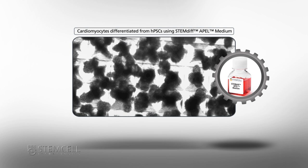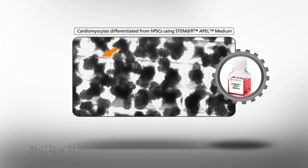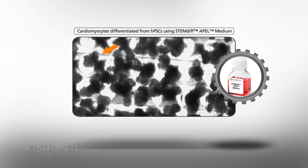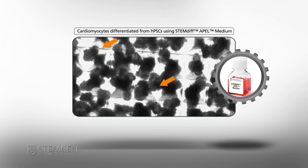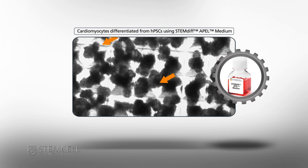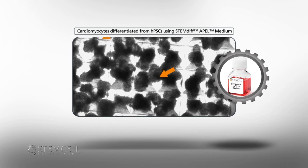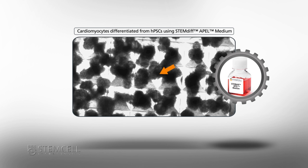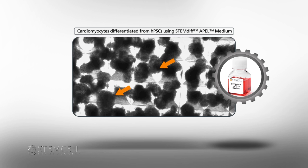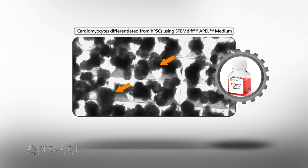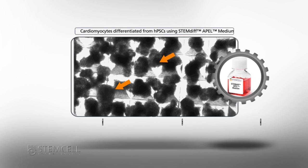For example, StemDiff APEL Medium can be used to differentiate human pluripotent stem cells to cardiomyocyte cells. Here you can clearly see that the transparent areas of the embryoid bodies are beating.